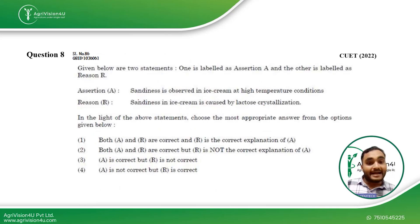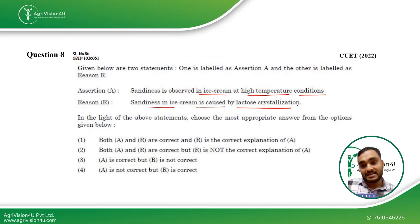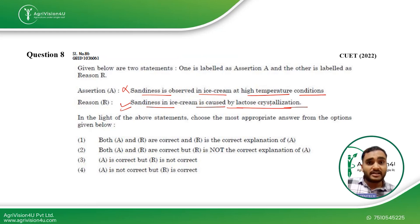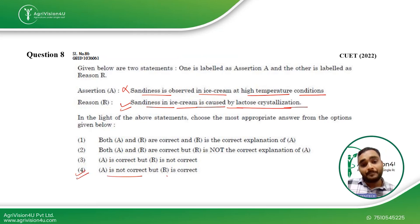Coming to the last question: Statement 1 — sandiness is observed in ice cream at high temperature conditions. Statement 2 — sandiness in ice cream is caused by lactose crystallization. Sandiness is observed when slow freezing is used — it is not caused by high temperature conditions, so Statement 1 is wrong. However, Statement 2 is correct: sandiness is indeed caused by lactose crystallization. When ice cream is frozen slowly, the texture is not smooth and sandiness is observed. The fourth option — A incorrect, B correct — is the answer. This was also asked in CUET 2022.